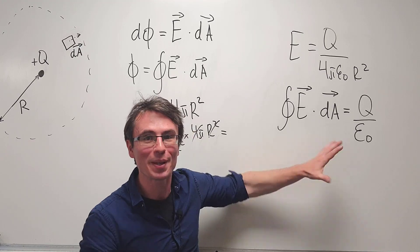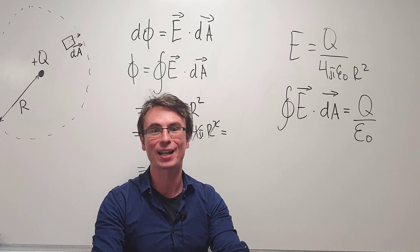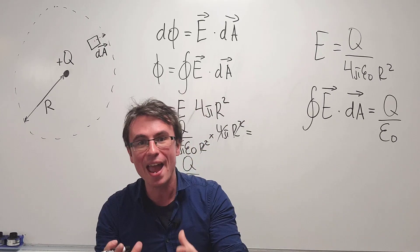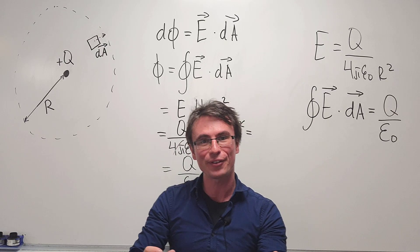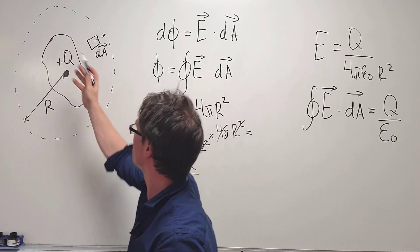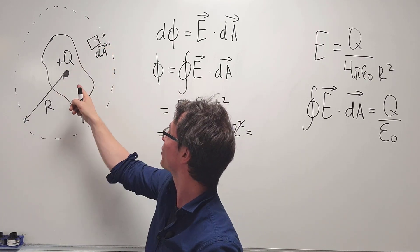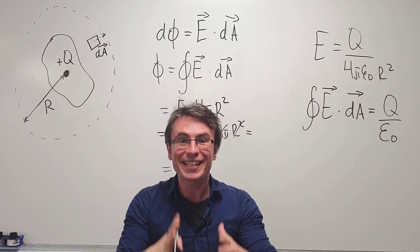And this relationship is known as Gauss's law, which is the first of Maxwell's equations. It is true for every closed surface around the charge, because if we had a different closed surface, all of the electric field lines will have to exit this surface.